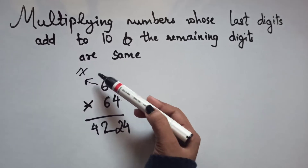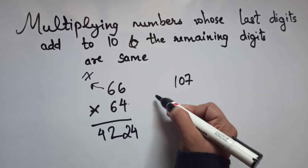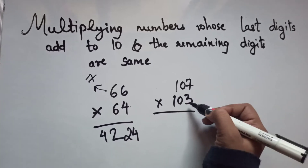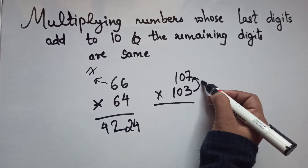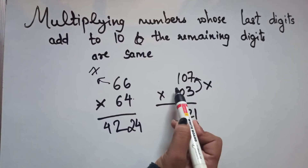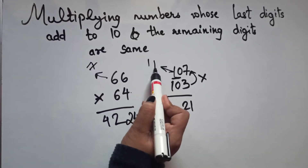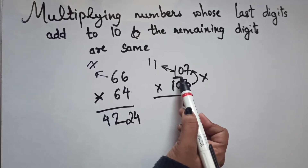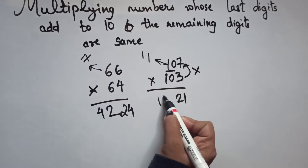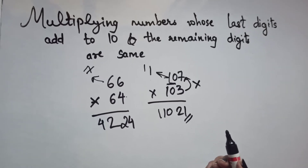Let's take 107 × 103. Multiply the unit digits: 3 × 7 = 21. The remaining same part is 10, and after 10 comes 11, so 10 × 11 = 110. Therefore 107 × 103 = 11021. It only took a few seconds.